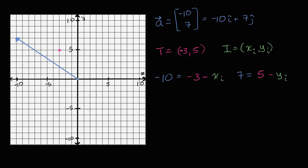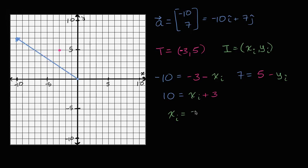If we multiply both sides of the x equation by negative one, we get 10 equals x_i plus three. Subtracting three from both sides, we get x_i equals seven.